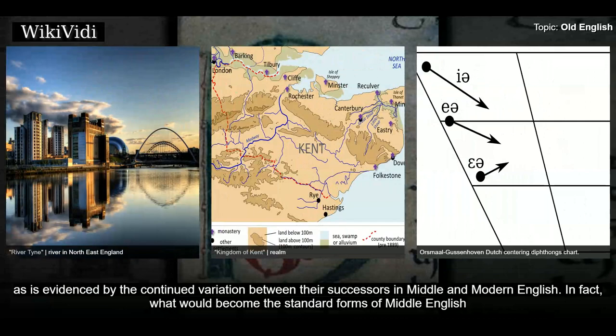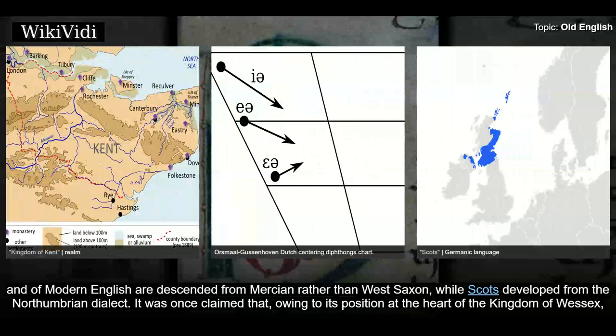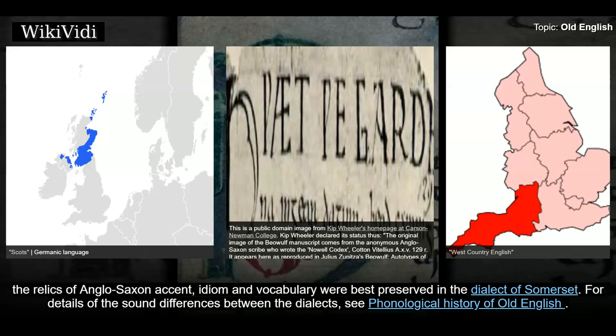What would become the standard forms of Middle English and of Modern English are descended from Mercian rather than West Saxon, while Scots developed from the Northumbrian dialect. It was once claimed that, owing to its position at the heart of the Kingdom of Wessex, the relics of Anglo-Saxon accent, idiom, and vocabulary were best preserved in the dialect of Somerset.